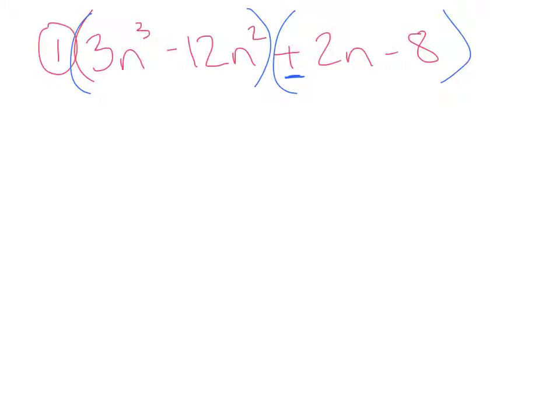And then what you do is you just look at the first 2. So we're just looking right here, and we'd say, what can go into 3n³ and -12n²? Well, 3 can go in there.